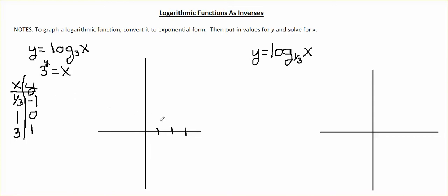So let's go ahead and graph those values. At x = 1/3, we're down at y = negative 1. At x = 1, we're at y = 0. And at x = 3, we're at y = 1. Let's continue — if we put in y = 2, we get x = 9. So all the way out at 9, we're up at 2, and it looks like the graph continues out in that direction.